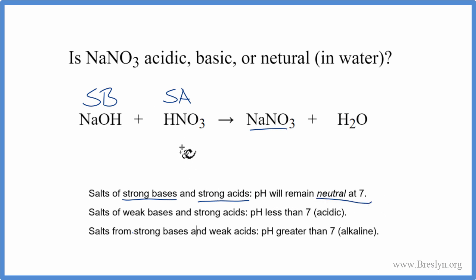So we have our strong base and our strong acid. Those react in a neutralization reaction. They give us our sodium nitrate. And because of that strong acid, strong base, we get a pH of seven, which is neutral when we have NaNO3 dissolved in water.